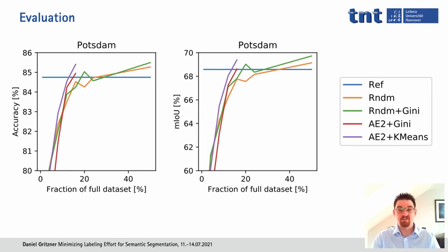This is the same type of evaluation but on a different dataset, with axes and curves labeled the same. Here, even the random selection of a subset eventually causes better performance than the reference using the full dataset — again, probably because of ambiguities in the full dataset not present in the smaller one. Adding Gini impurity on top of random selection didn't provide a meaningful benefit here. However, our autoencoder approach still managed to reach better-than-reference performance with a much smaller dataset: at about 12% it reached the reference, and at 16% it outperformed it. In this case, adding k-means clustering provided a small benefit, though on average across all five datasets the difference is very small.